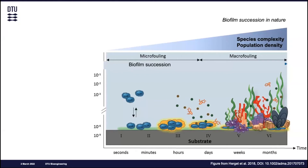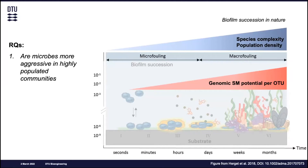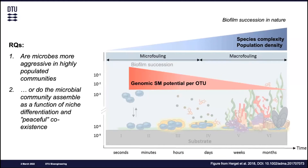The background for this biofilm succession is that when we submerge clean surfaces into natural seawater, more and more bacteria adhere and colonize the surface. In the end, higher organisms and protists come and create macrofouling — as we know from boats in harbors. Assuming that most interactions in microbial communities are negative and mediated by antibiotic secondary metabolites in interspecies competition, we ask: are microbes more aggressive in high-populated communities? We would then expect to see an increase in the overall genomic secondary metabolite content per OTU over time. Or do we see that the microbial community functions as a niche differentiation and peaceful coexistence? In that case, we would see the opposite.